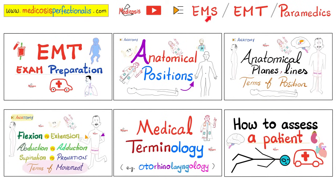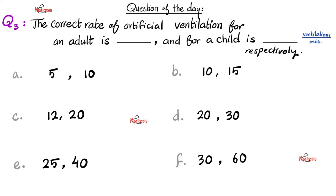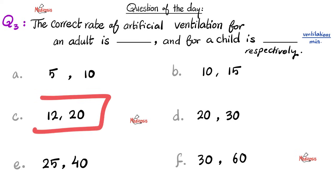This is my emergency medical services playlist — please watch these videos in order. Let's start by answering the question from the previous video: the correct rate of artificial ventilation for an adult is how many ventilations per minute, and for a child how many per minute? The options were 5 and 10, 10 and 15, 12 and 20, 20 and 30, 25 and 40, or 30 and 60. The correct answer is 12 and 20.